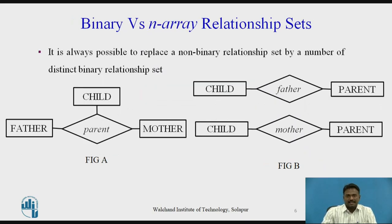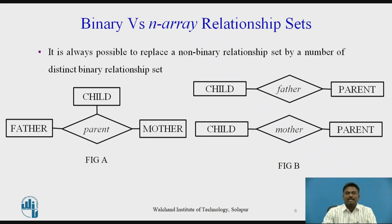Next, binary versus N-ary relationship. It is always possible to replace a non-binary relationship set with a number of distinct binary relationship sets. Consider an example where a child is related to a mother and a father through a relationship 'parent' as shown in figure A. But if we represent this with two binary relationships as shown in figure B, this provides a record of a child's mother even if we do not have the father's identity. If we use the ternary relationship in figure A, we have to store a null value if the father's identity is unknown, and using null values is not preferable. In such a case, using binary relationship sets instead of ternary relationship sets is more preferable.